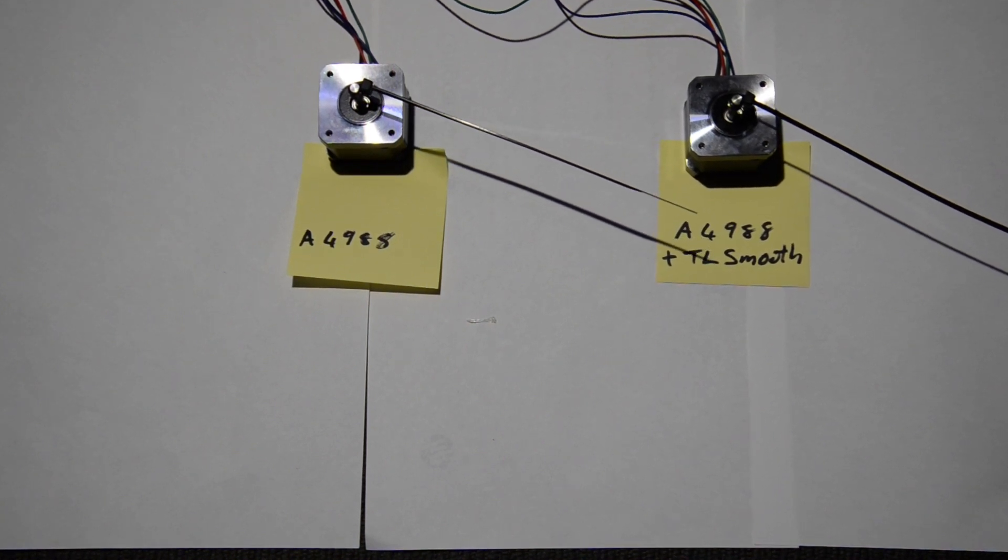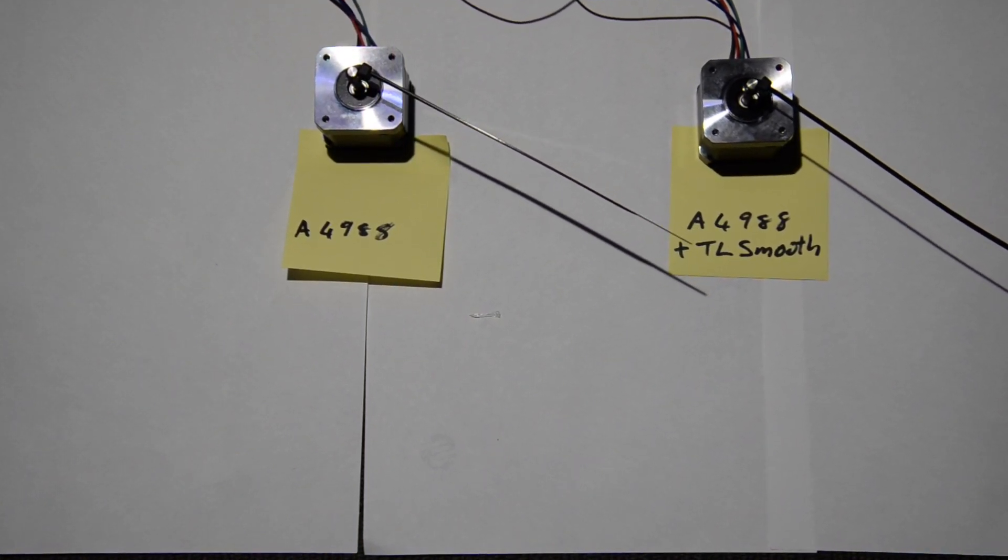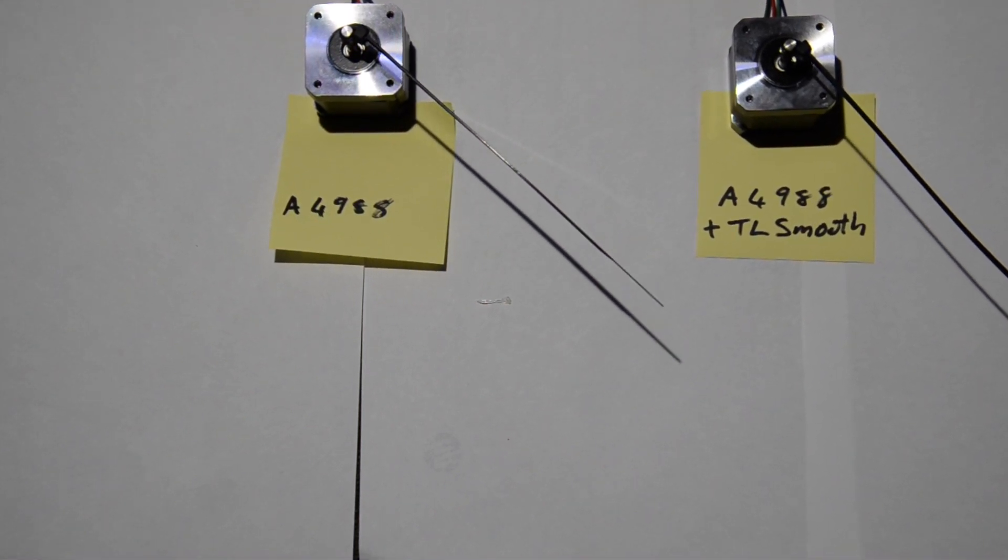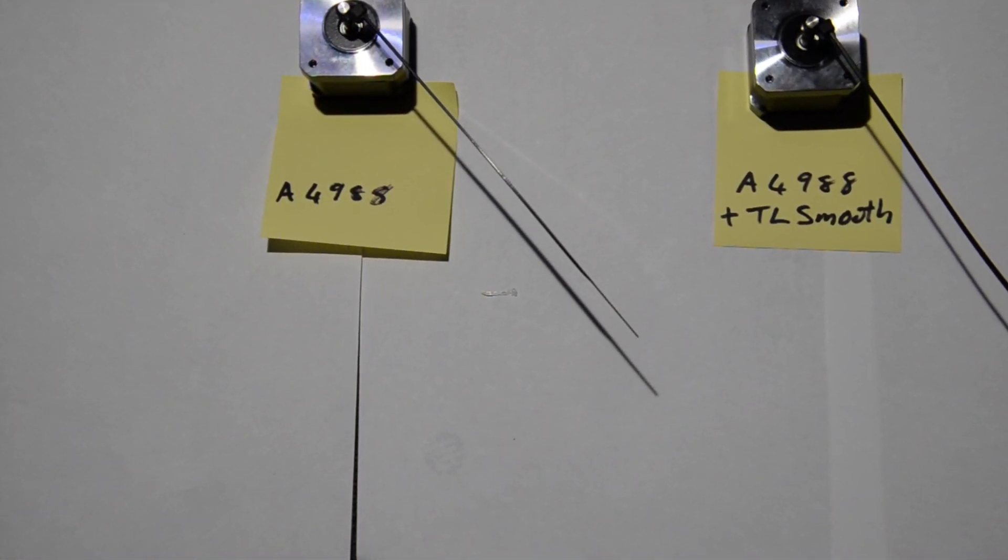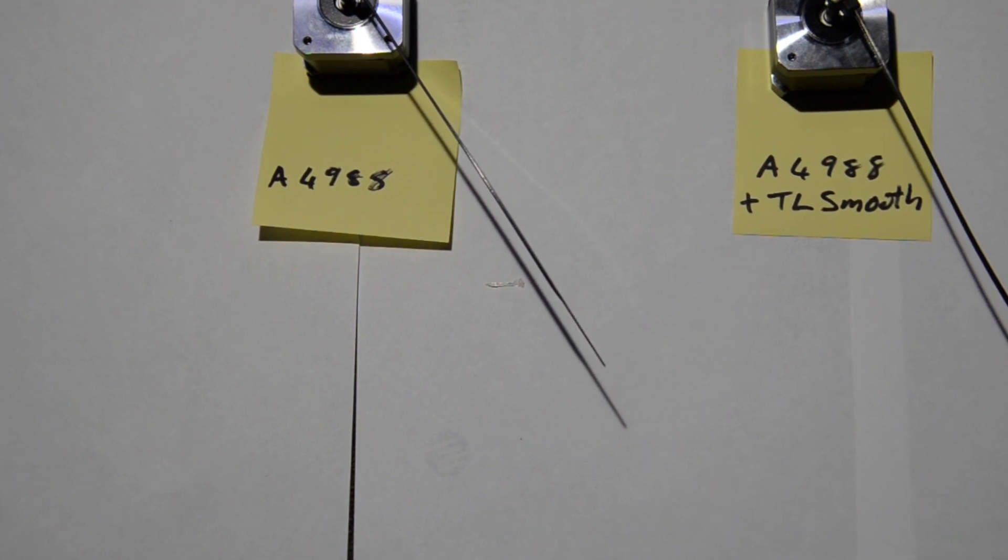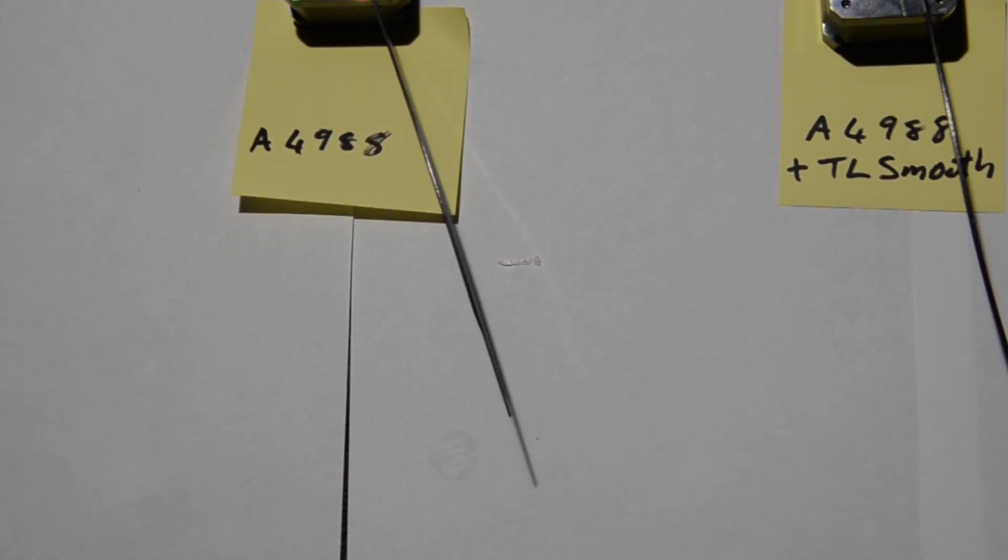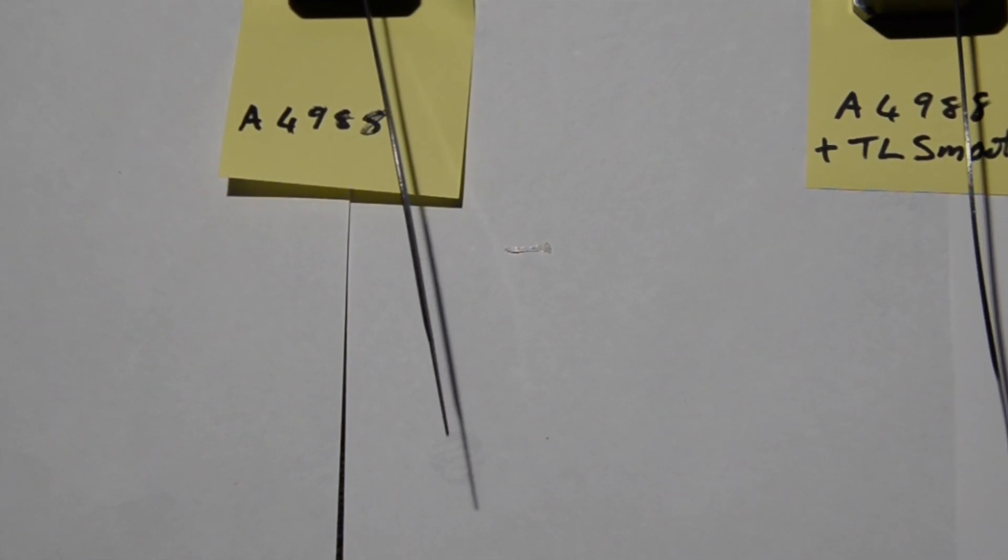between the stepper motor on the left without the TL Smoothers. It seems to have a little bit of a jump while moving, and the one on the right with the 8-diode TL Smoother. There's a tiny difference between the two, but it could be my imagination.